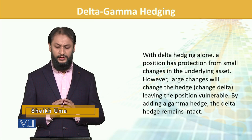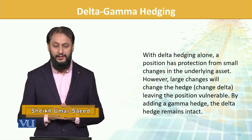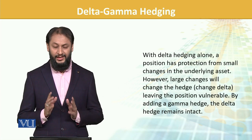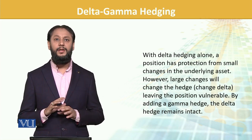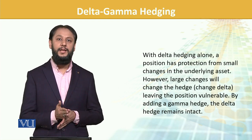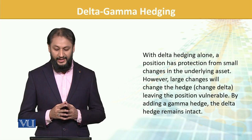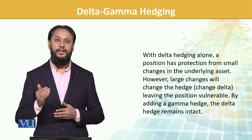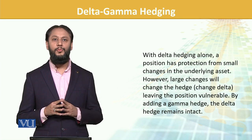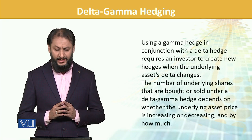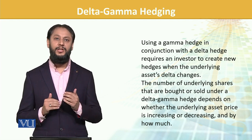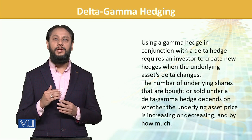With Delta hedging alone, a position has protection from small changes in the underlying. If there is only a small underlying change, that will be captured. However, large changes will change the hedge — if there is a significant change, the hedging situation will be impacted and Delta will change, leaving the position vulnerable. By adding Gamma, the Delta hedge remains intact. Using Gamma hedge in conjunction with Delta hedge requires investors to create new hedges when the underlying asset's Delta changes.